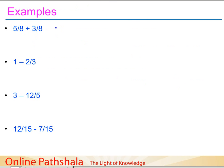Example 1: Add 5 eighths and 3 by 8. Since these are like fractions, we simply add the numerators and keep the denominator. We get 8 by 8, which simplifies to 1 — meaning we are considering all 8 parts out of 8 parts.